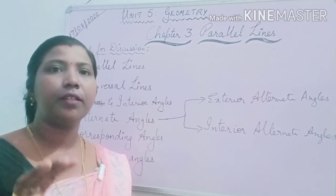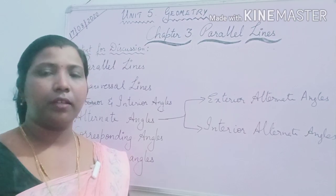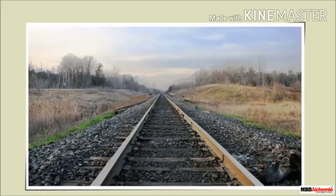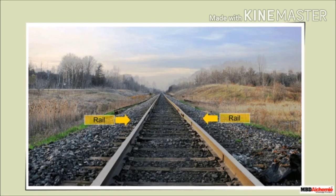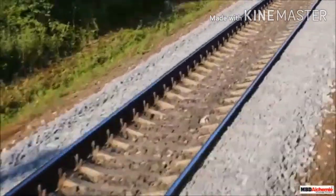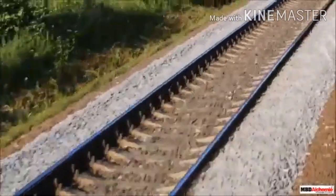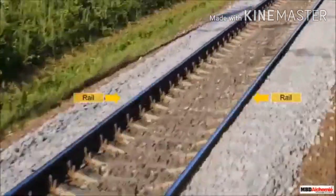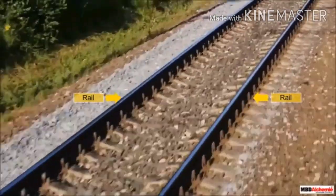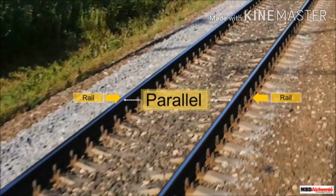Have you ever seen railway tracks? This is an image of a railway track. Have you noticed the position of the rails? These rails are placed opposite to each other. If you keep moving ahead on the same track, do the rails meet anywhere? No, they do not meet anywhere. So what can you say about the pair of rails? It shows that the rails are parallel to each other.